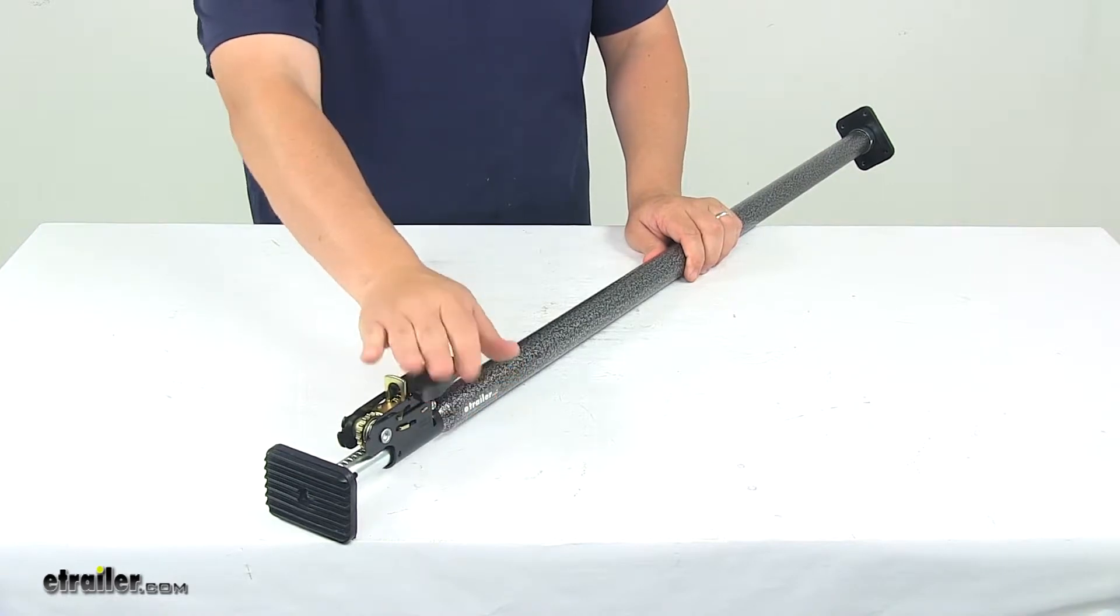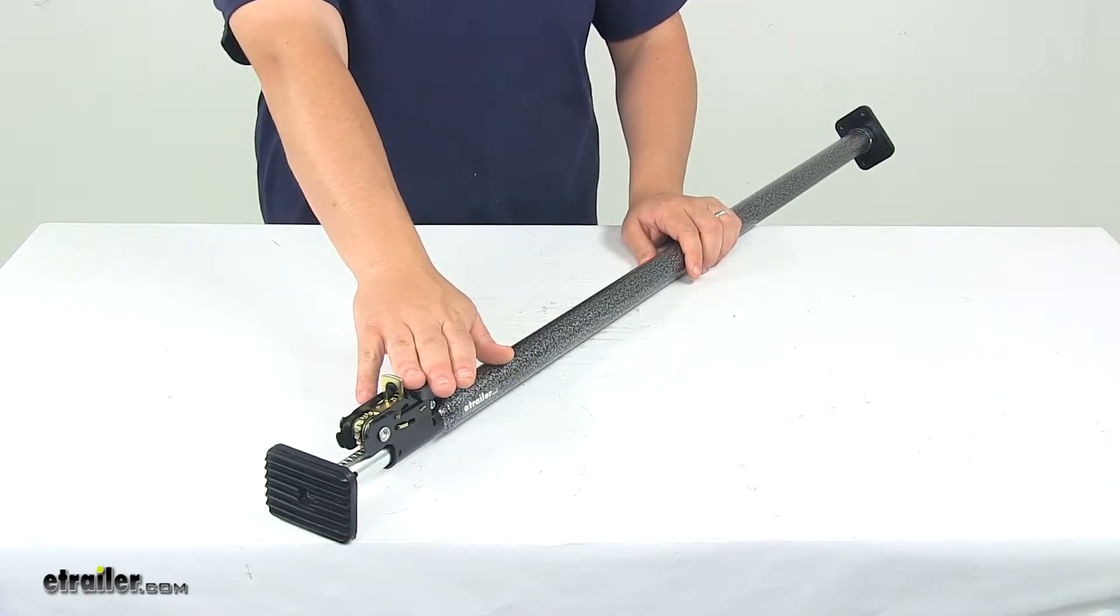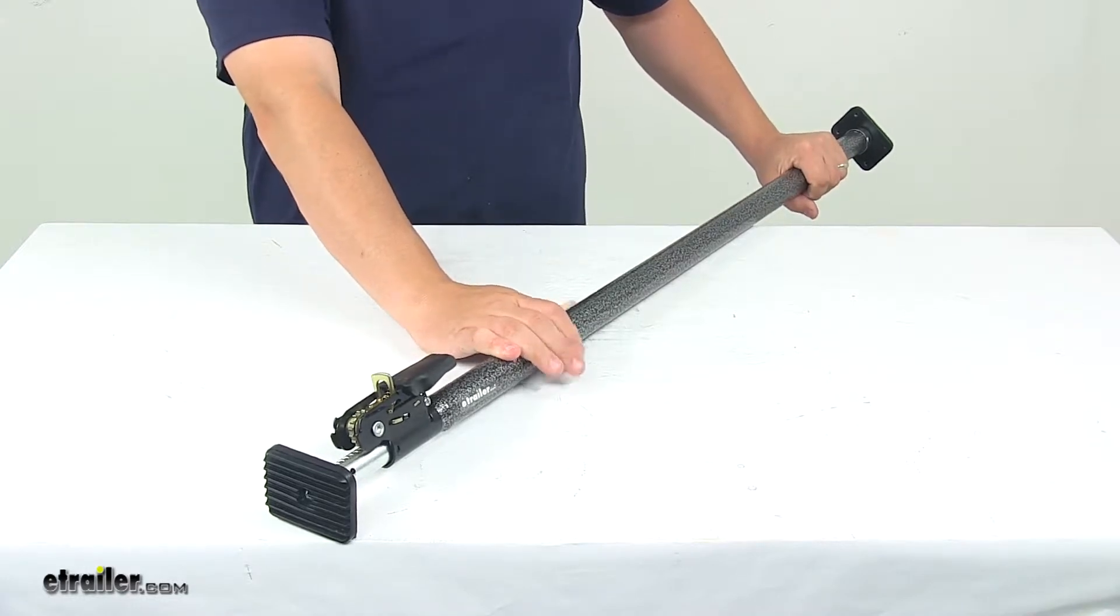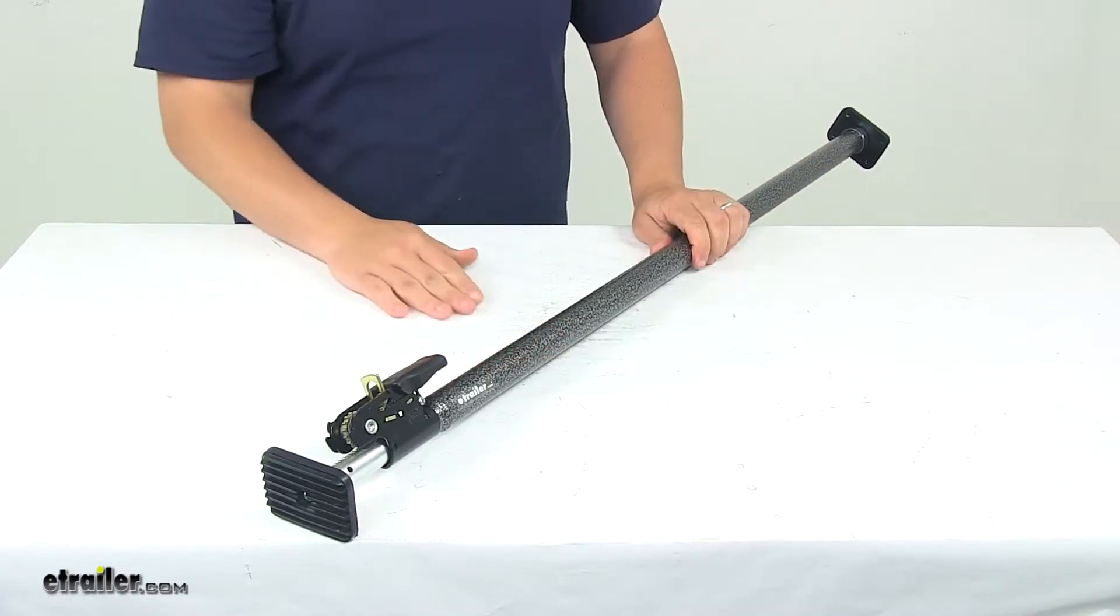The ratcheting mechanism creates more tension for a tighter, stronger hold. And the unit is constructed from durable metal with protective finishing to keep it safe from rusting and corrosion.